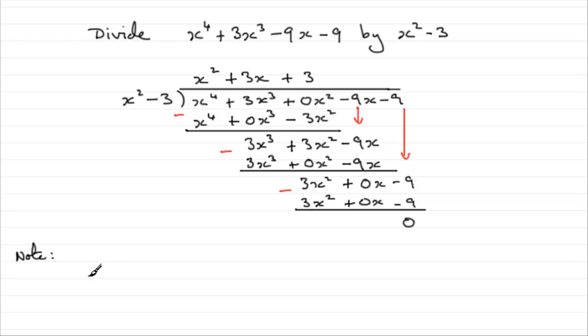So, you could actually say, not that we're being asked to do that, that x to the power 4 plus 3x cubed minus 9x minus 9, is identical to x squared minus 3 being multiplied by the quotient here, x squared plus 3x plus 3. So, we end up with a quadratic factor here and a quadratic factor here.